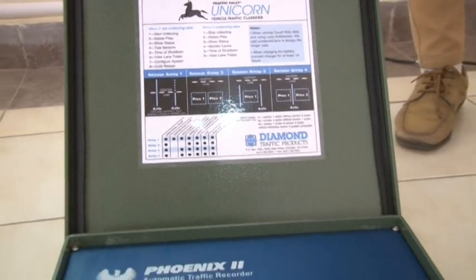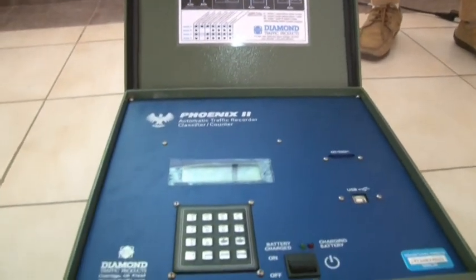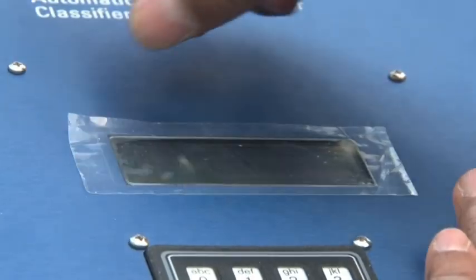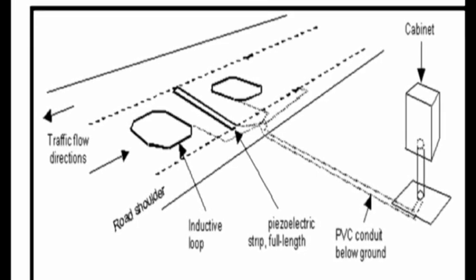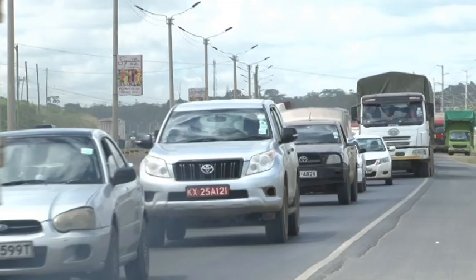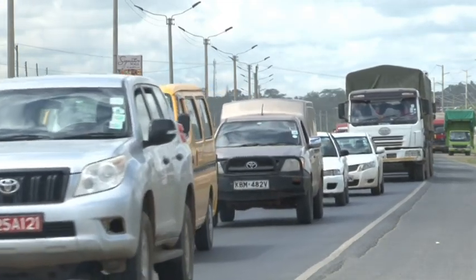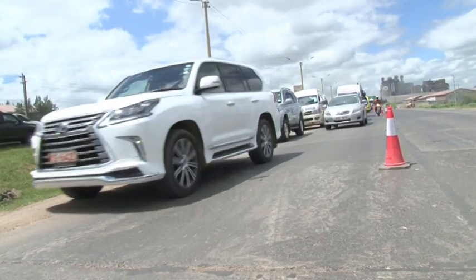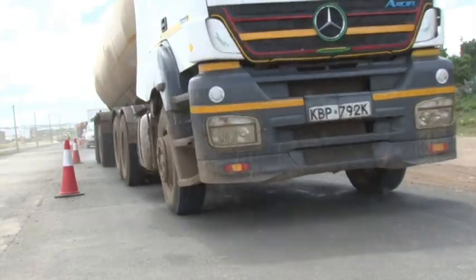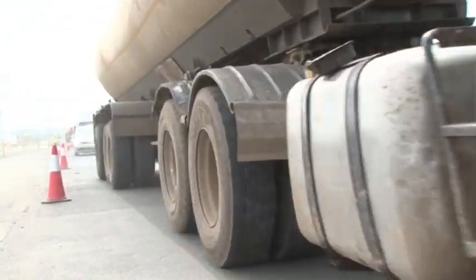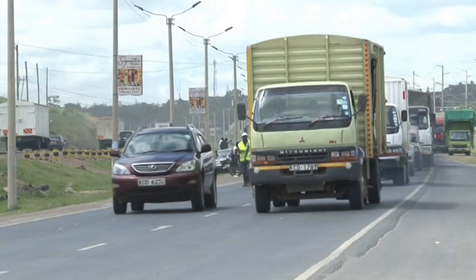An automatic traffic counter and classifier system is a data gathering device installed on roadways. The data it collects can include daily traffic on a particular road, vehicle classification, number of axles, speed, and vehicle class time.